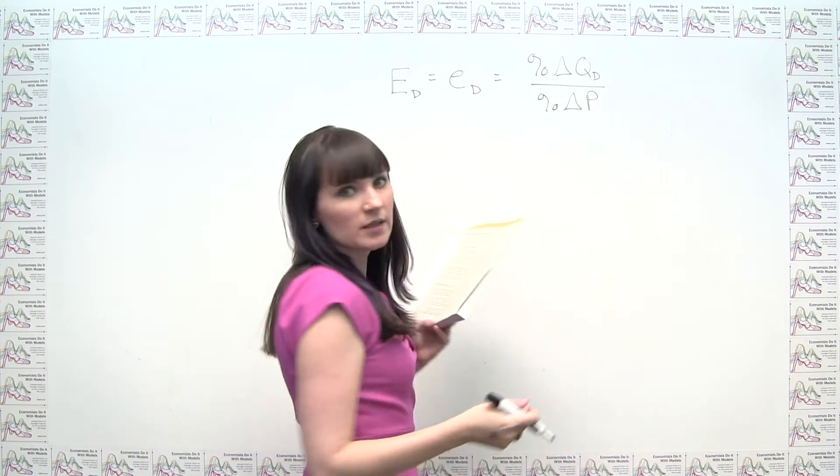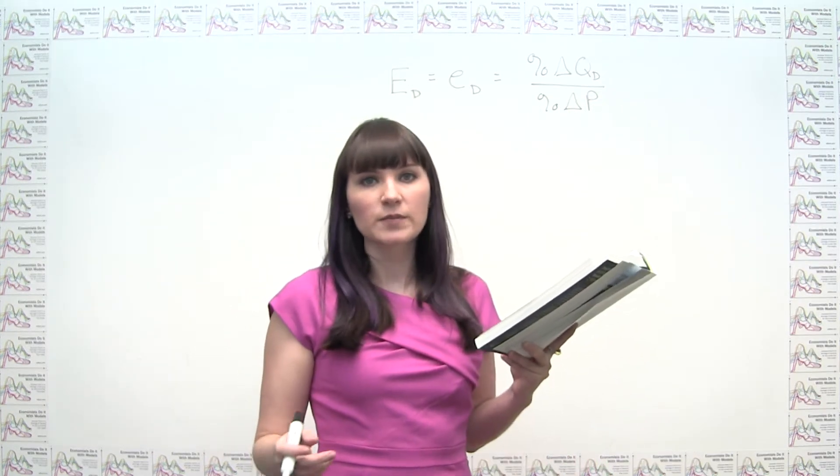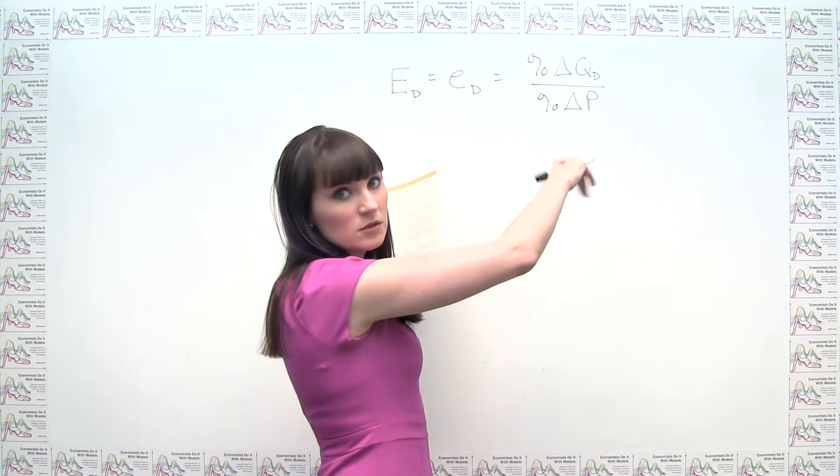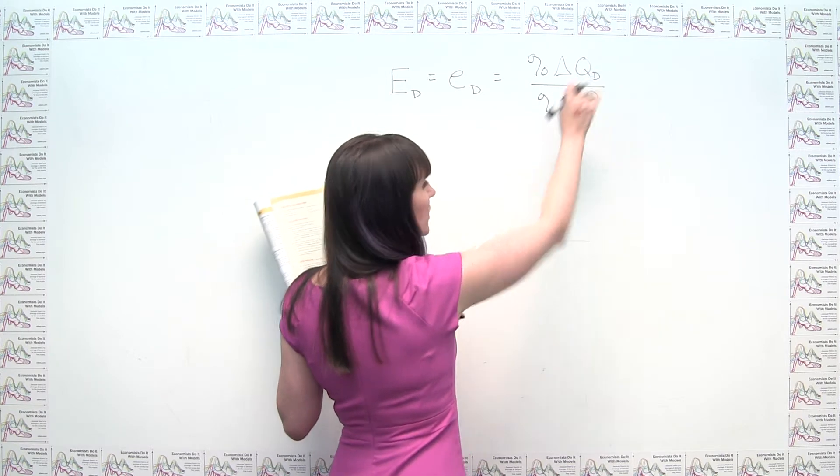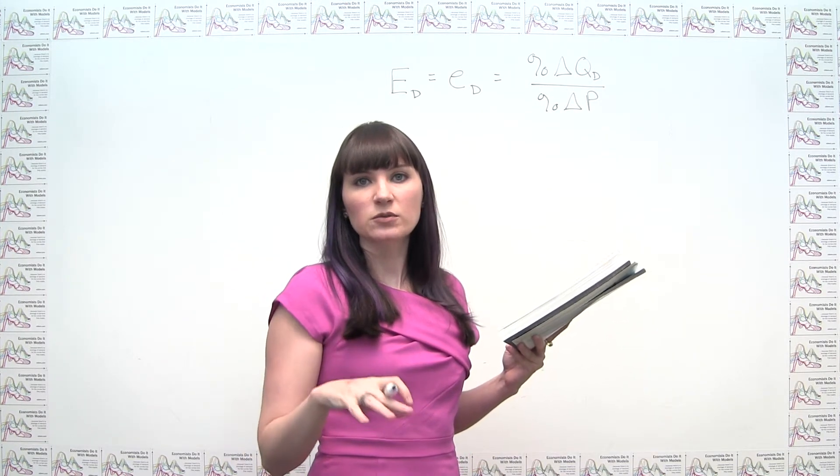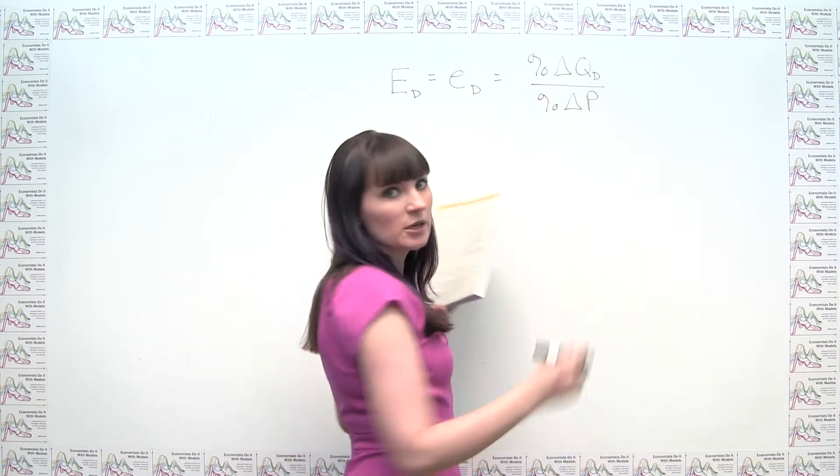Now, if we're looking at the Mateer Coppock textbook, they leave elasticity of demand as a negative number because you notice that quantity demanded and price are always going to be moving in opposite directions. So one's going to be a negative change and one's going to be a positive change, resulting in a negative ratio.